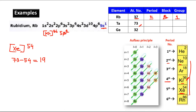According to the Aufbau principle, Xenon is from the fifth period so its last electron is 5p. After 5p comes 6s, then 4f, then 5d. Placing 19 electrons: 2 in 6s, 14 in 4f, and 19 − 16 = 3 remaining in 5d. So the configuration is [Xe] 6s² 4f¹⁴ 5d³.